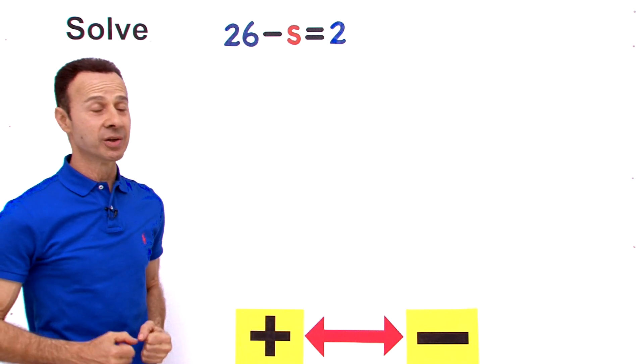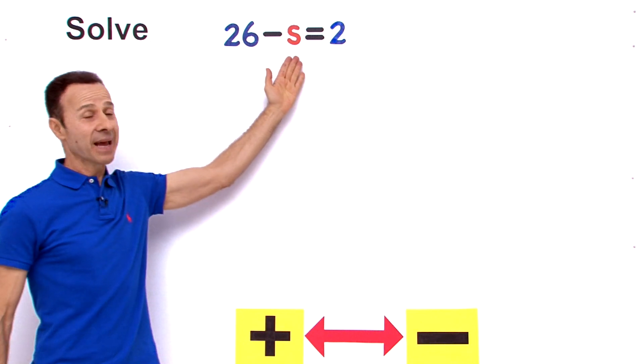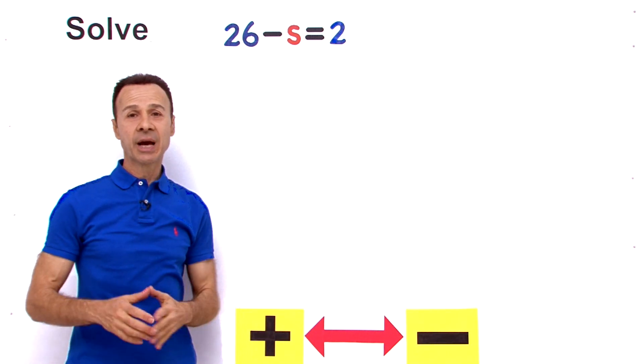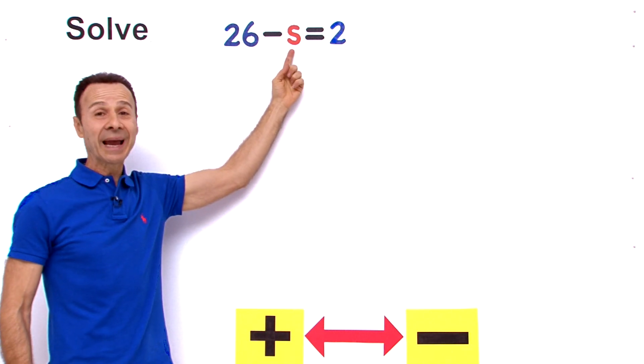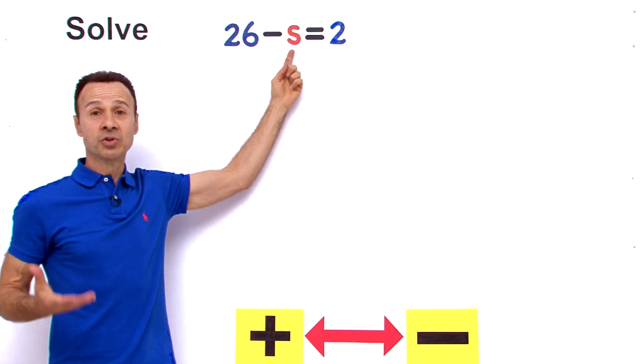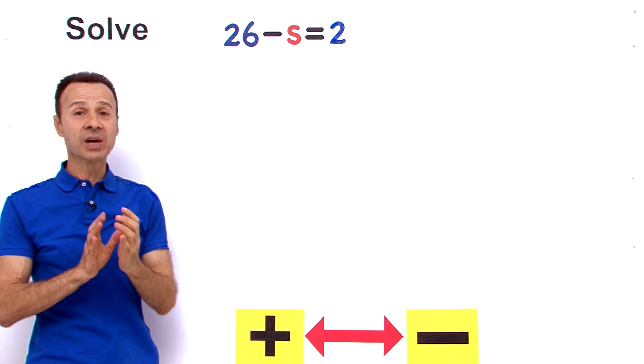Our mission in this question is to solve this equation 26 minus s equals 2. Now our outcome in solving is to figure out what the unknown variable s equals. And in order to do that we need to get s all by itself on one side of the equation.